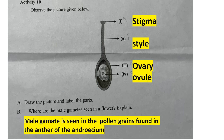Activity 10: Observe the picture given below. The parts are: first — stigma, second — style, third — ovary, fourth — ovule. Where are the male gametes? Male gametes are seen in pollen grains, found in the anther of the androecium.